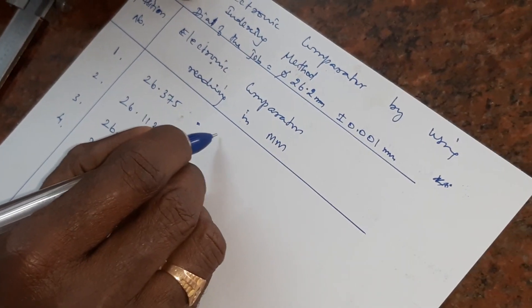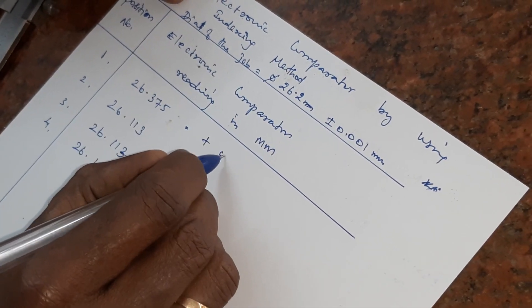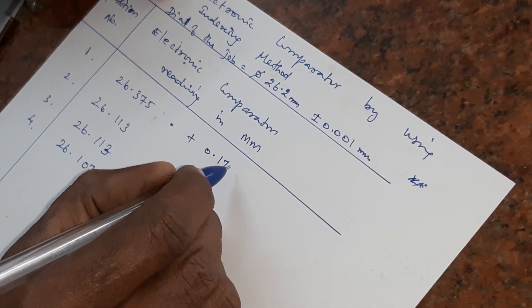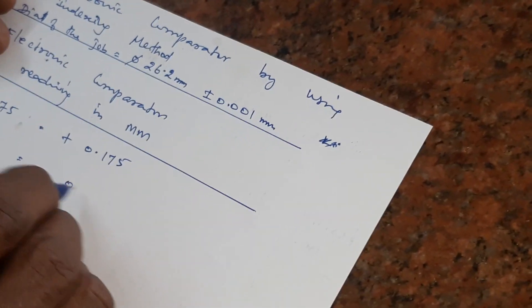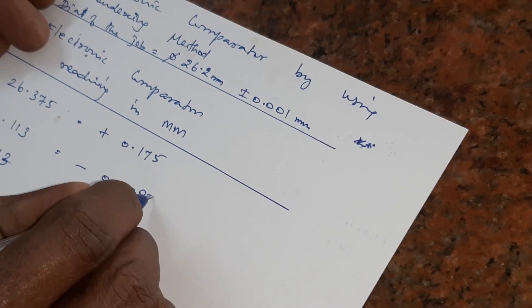We have to subtract the workpiece diameter with the deviations measured from the electronic comparator. Circularity always comes with plus or minus tolerance.